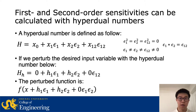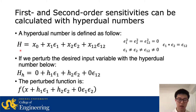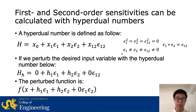We can calculate first- and second-order sensitivities using something called hyperdual numbers. A hyperdual number H is defined as x0 plus three non-real parts. One key characteristic is that ε₁², ε₂², and ε₁₂² are equal to zero, but they themselves are not equal to zero. This is quite similar to imaginary numbers, where i² = -1 but i doesn't equal anything in the real space.